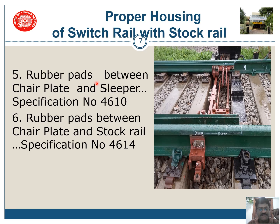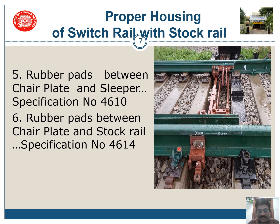Rubber pads between chair plate and sleeper of specification 4610 shall be used. There is another rubber pad between stock rail and chair plate, which shall be of specification 4614. This 4614 rubber pad will generally be damaged due to train movements, so whenever any chance is available, you should remove all these rubber pads and provide new ones. If these rubber pads are damaged, the stock rail will come down and proper housing will not take place.